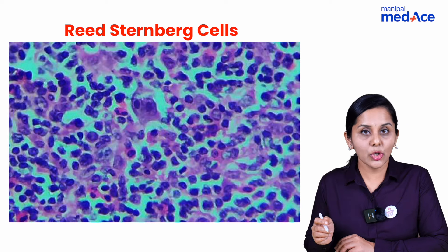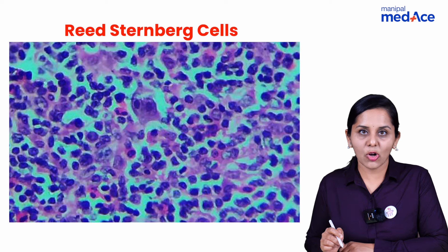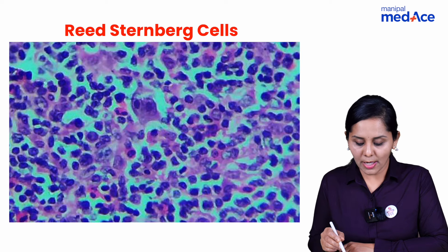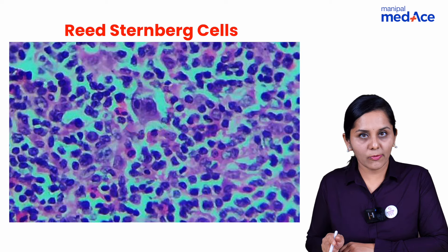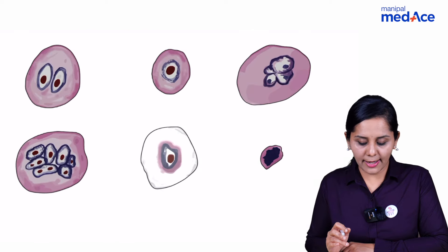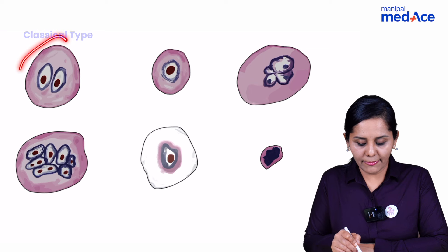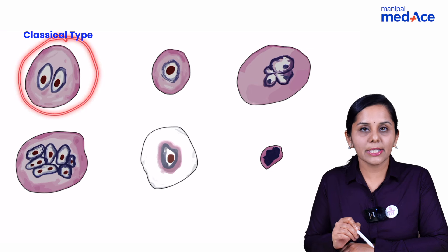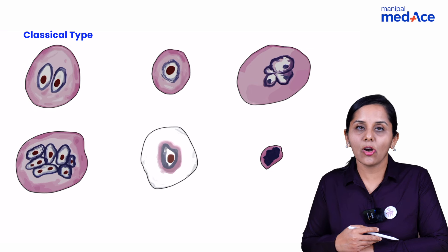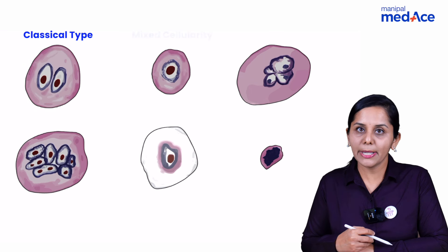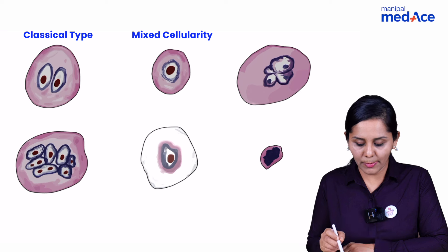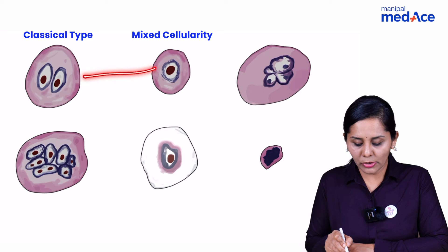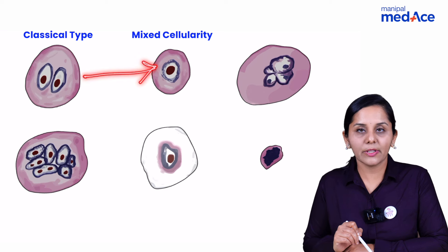and if the sample is from the lymph node, yes, you are dealing with Hodgkin lymphoma. Always remember the classic morphology of this and its variants. The classic Reed-Sternberg cell is commonly found in mixed cellularity type of Hodgkin lymphoma.